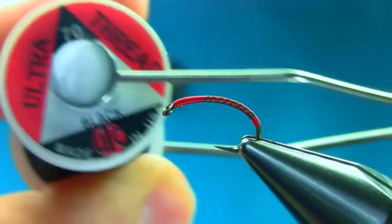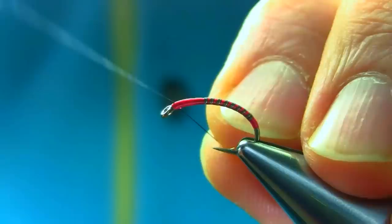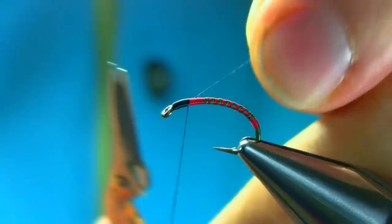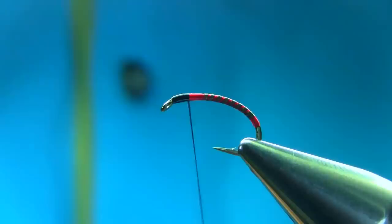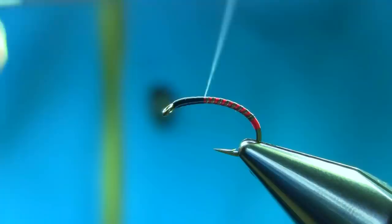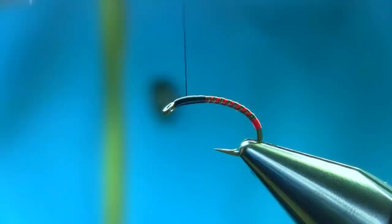The next material is UTC70 black. So different thread just for the head. Take this extra piece and touch and turn. And go back up again.